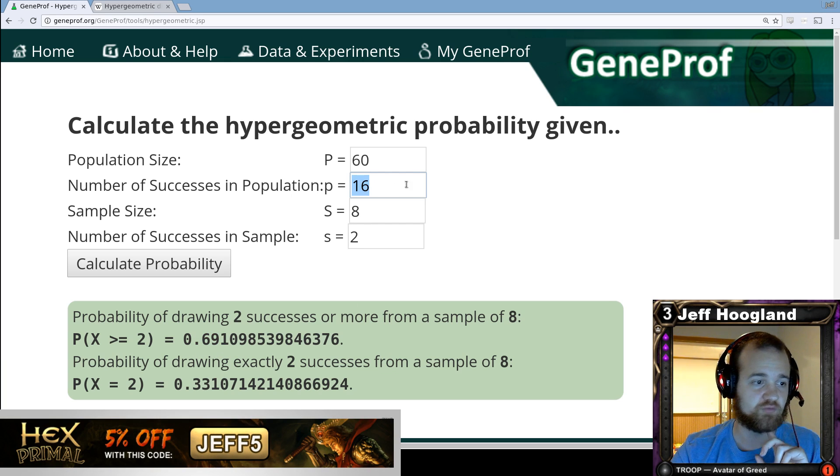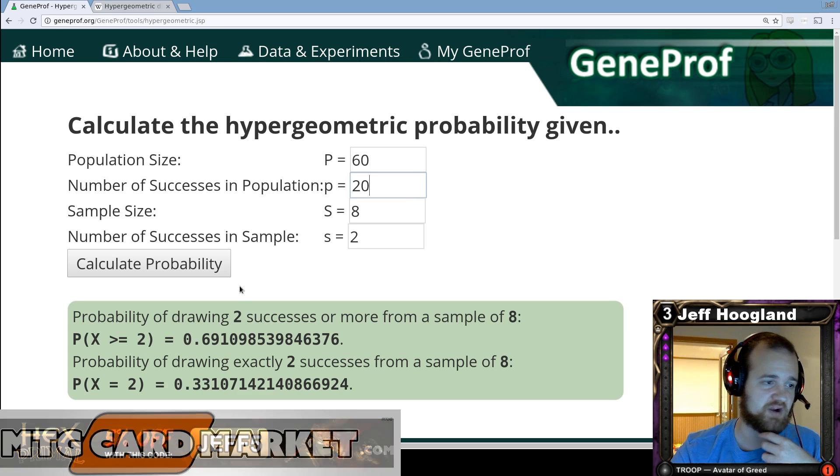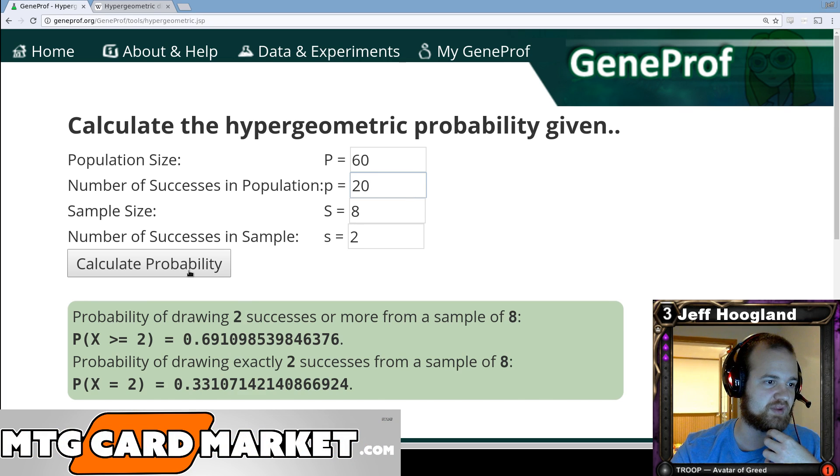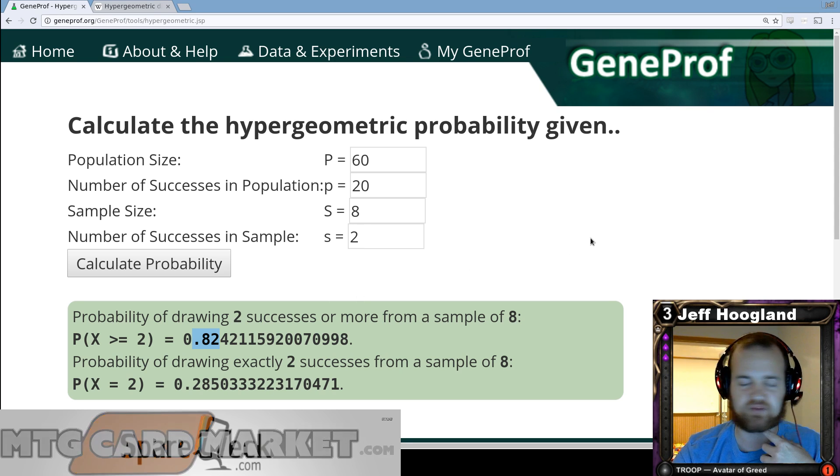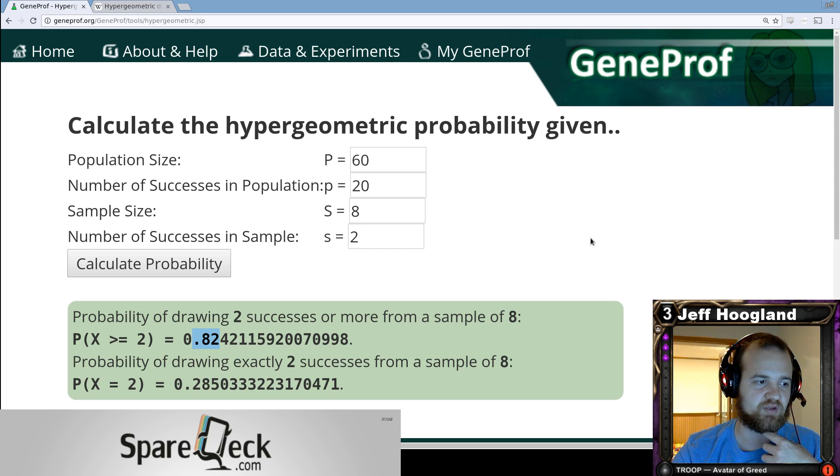A number I'm more comfortable with is if we kick this number up to 20, which is what I recommended in his mana base. If we have 20 black sources, we're going to gain over 10% on that likelihood that you're going to be able to play your Grasp of Darkness turn two on the play.